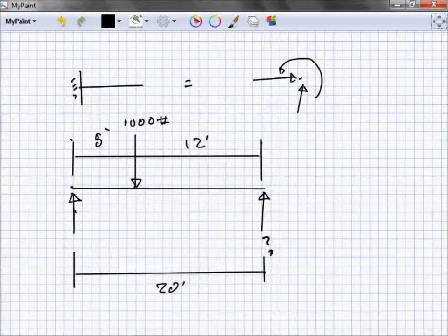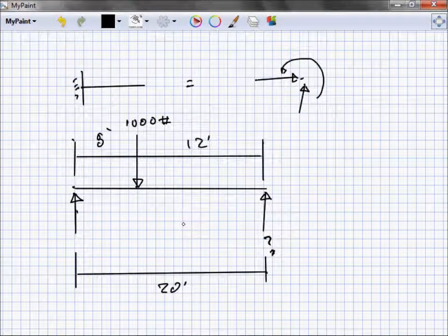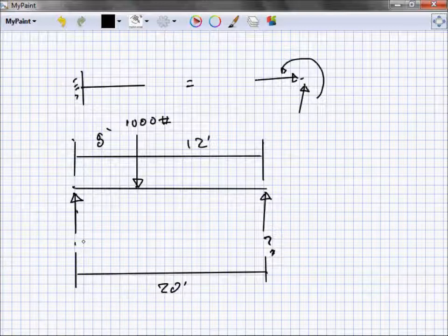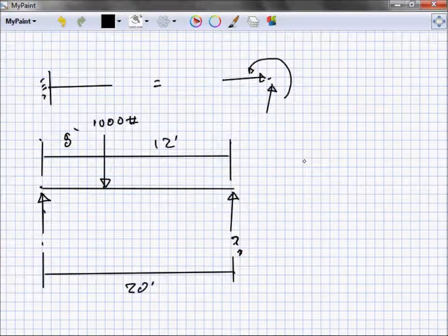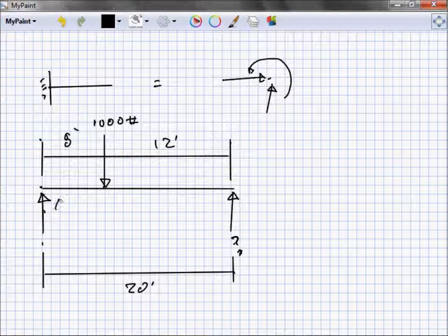Now all I've got is vertical - vertical loads some coming down some coming up. So I know that A plus B has got to equal 1,000. We're going to just call this A and B for argument's sake.